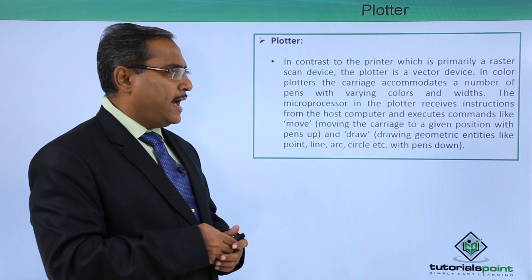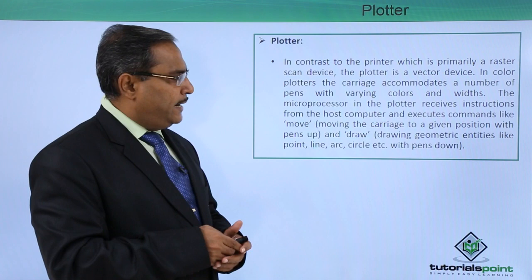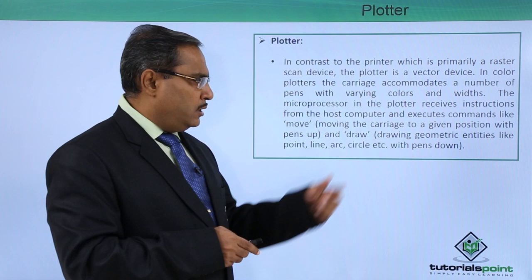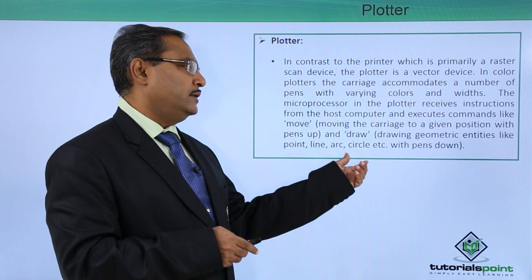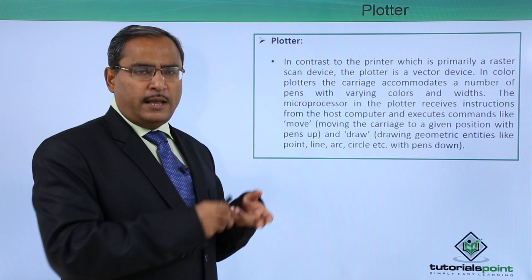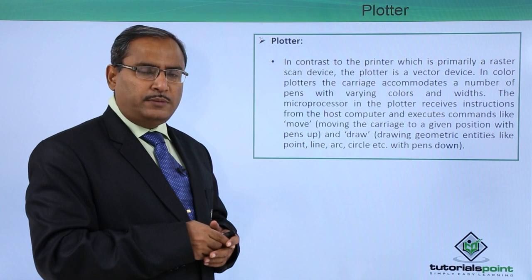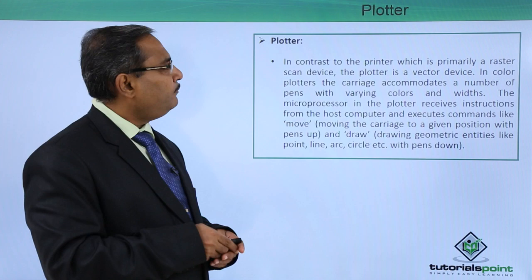In color plotters the carriage accommodates a number of pens with varying colors and widths. The microprocessor in the plotter receives instructions from the host computer and executes commands like 'move' — moving the carriage to a given position with pens up — and 'draw' — drawing geometric entities like point, line, arc, circle, etc., with pens down. One command is move where the pen will be up but the carriage will be moving, and the other is draw where the carriage moves and the pen remains down. For multicolor plotters, multiple pens with multiple colors and widths will be attached.